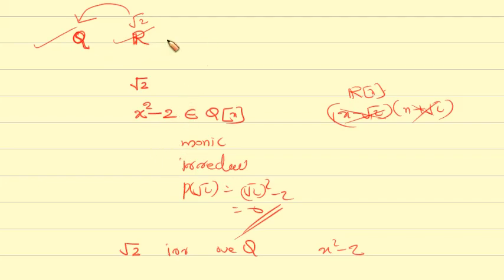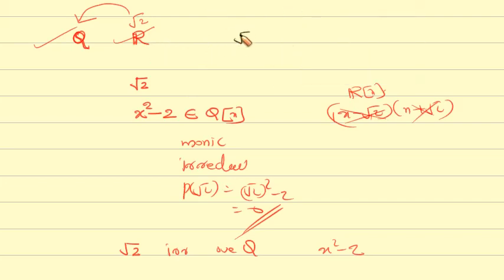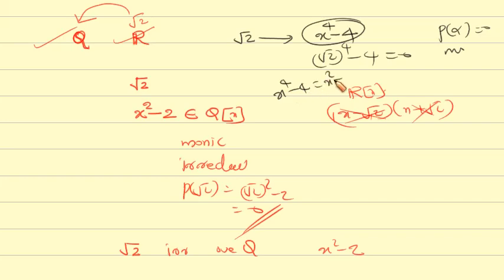Now consider x to the power 4 minus 4. We have root 2 raised to the 4th power minus 4 equals 4 minus 4 equals 0, so p(alpha) = 0. However, x to the 4th minus 4 is NOT irreducible, because x⁴ minus 4 factors as (x squared minus 2)(x squared plus 2). So this is q(x) — it is reducible.